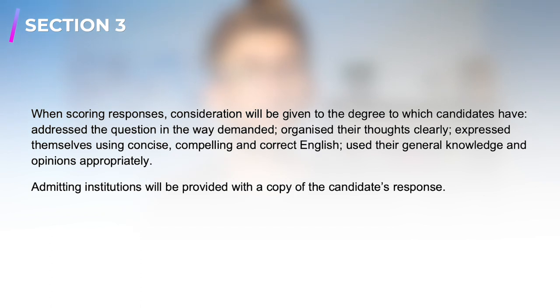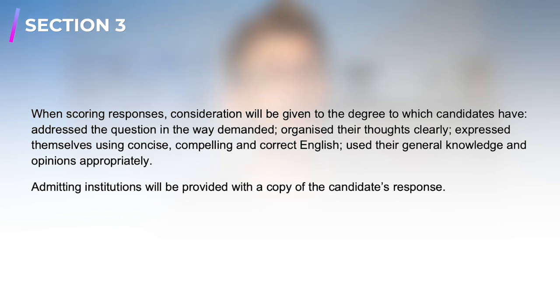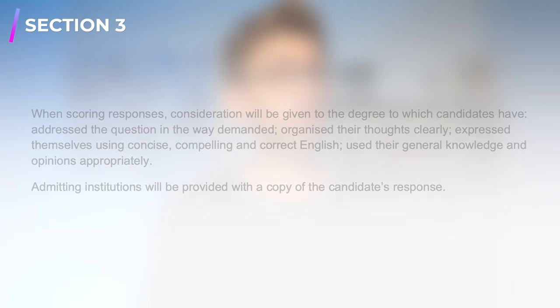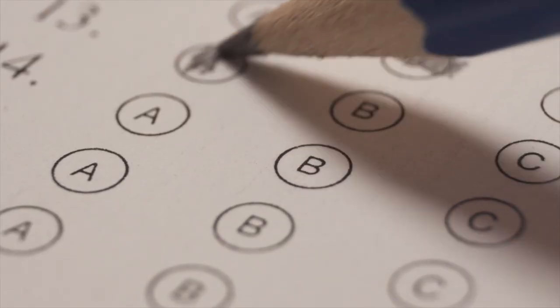The paper is given to two separate markers who each give their score, and then the average is taken. When scoring responses, consideration is given to: whether the candidate has addressed the question in the way demanded, organised their thoughts clearly, expressed themselves using concise, compelling and correct English, and used their general knowledge and opinions appropriately. Admitting institutions are provided with a copy of the candidate's response. On test day you receive three separate test papers, one per section.